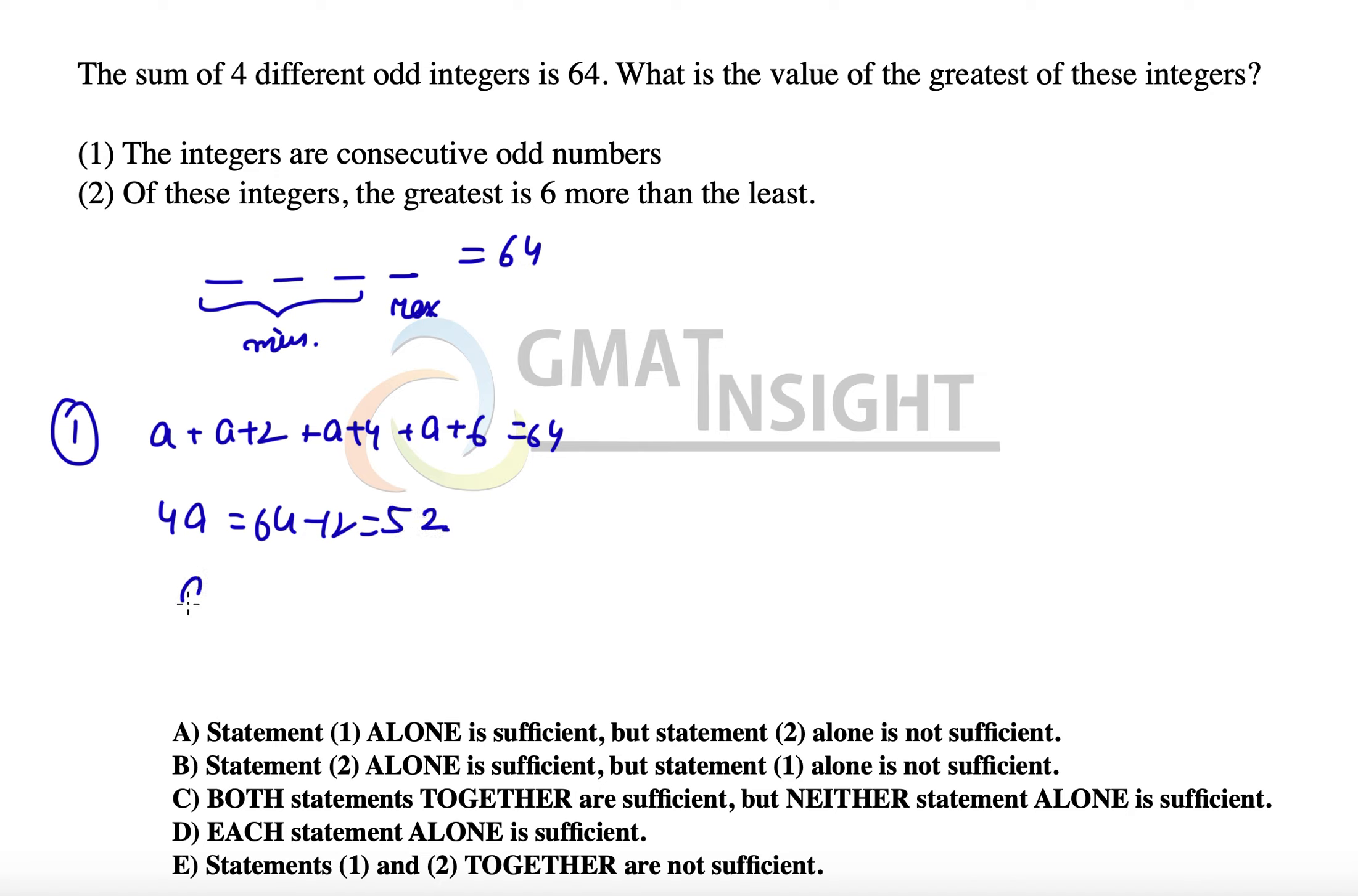52, which means a becomes equal to 52 divided by 4, which becomes 13. That means a plus 6, which is the biggest of them, is equal to 13 plus 6, that is 19.